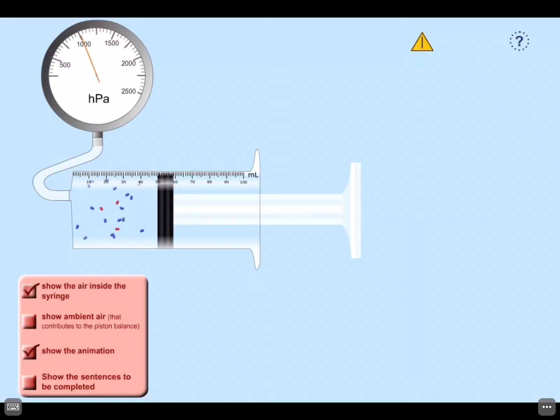When they hit the sides of the container, that's when pressure is created. Those particle collisions on a small scale are what's causing the pressure that we see quantified in the pressure sensor.